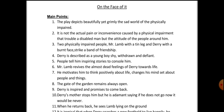On the Face of It — main points. The play depicts beautifully, yet grimly, the sad world of the physically impaired. It is not the actual pain or inconvenience caused by a physical impairment that troubles a disabled man, but the attitude of the people around him. Two physically impaired people — Mr. Lamb with a tin leg and Derry with a burnt face — strike a bond of friendship.